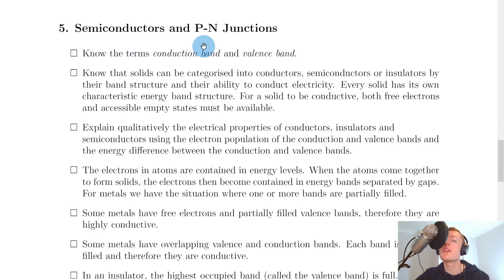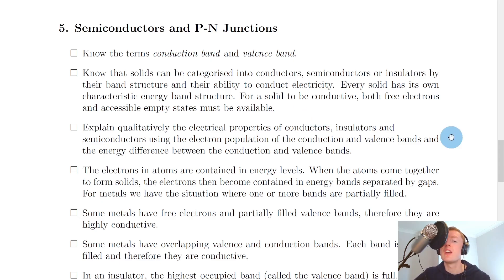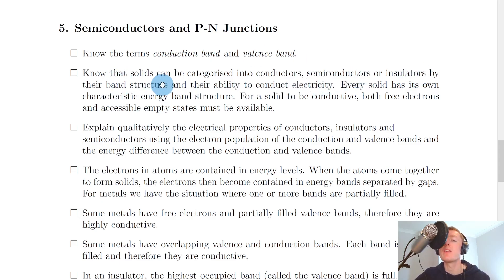Lastly, we have section five: semiconductors and P-N junctions. There are very few calculations in this section — maybe for solar cells you might use P equals IV or one or two other power equations, but it's mostly theory based. The SQA have outlined in detail what they want you to know. Firstly, you need to know the terms conduction band and valence band, and be able to define both. It says to know that solids can be categorised into conductors, semiconductors or insulators by their band structure and ability to conduct electricity. Every solid has its own characteristic energy band structure. For a solid to be conductive, both free electrons and accessible empty states must be available.